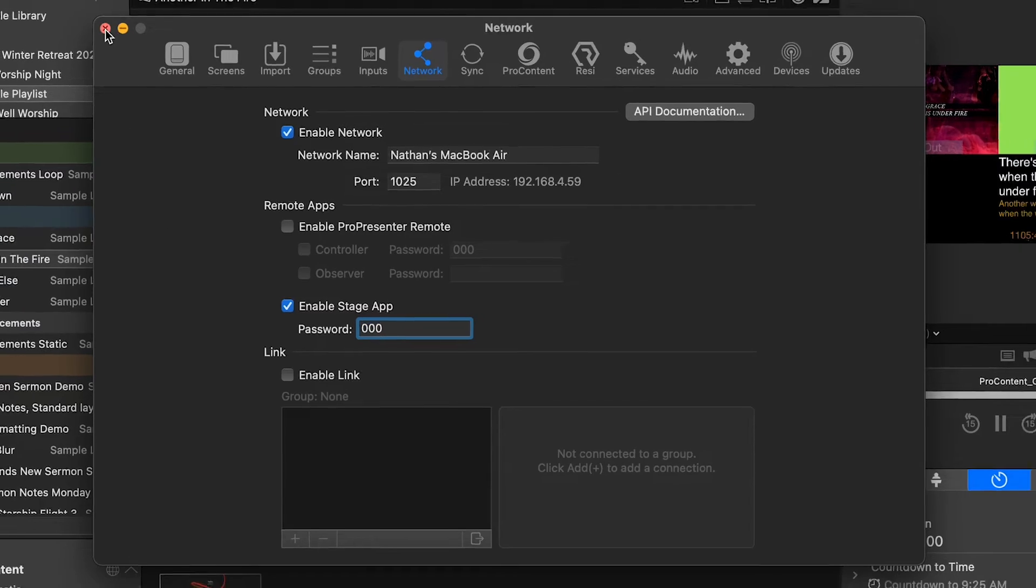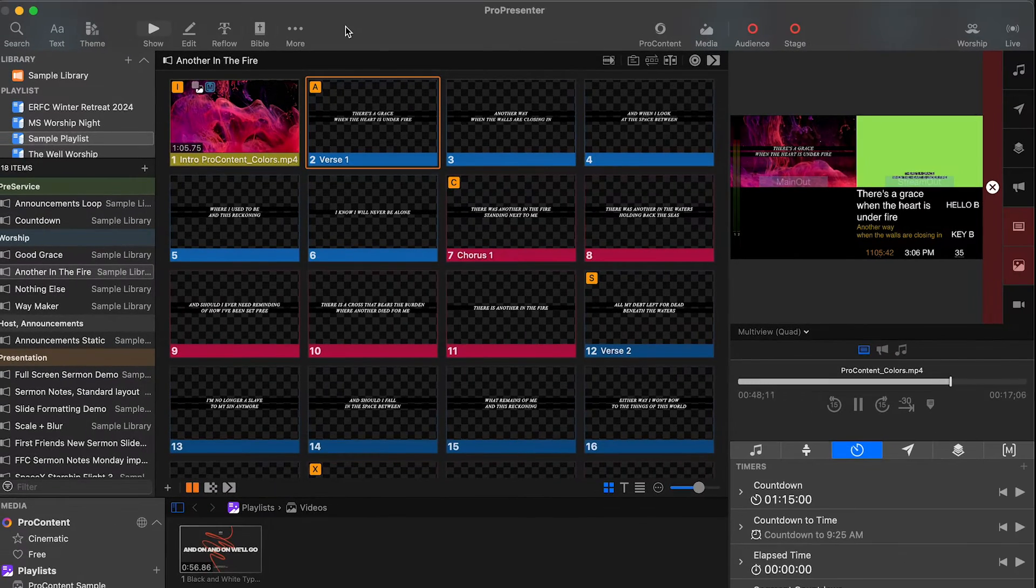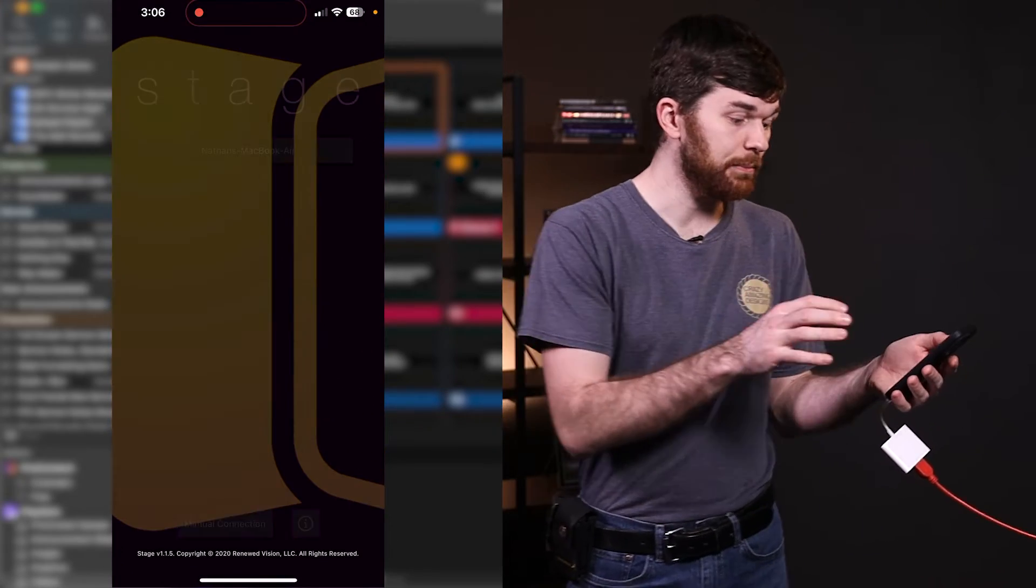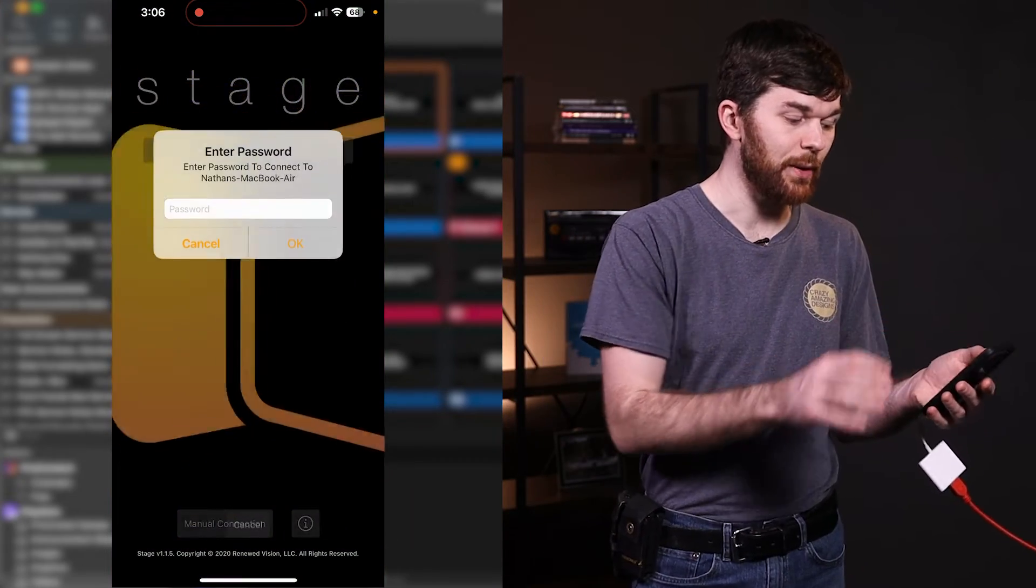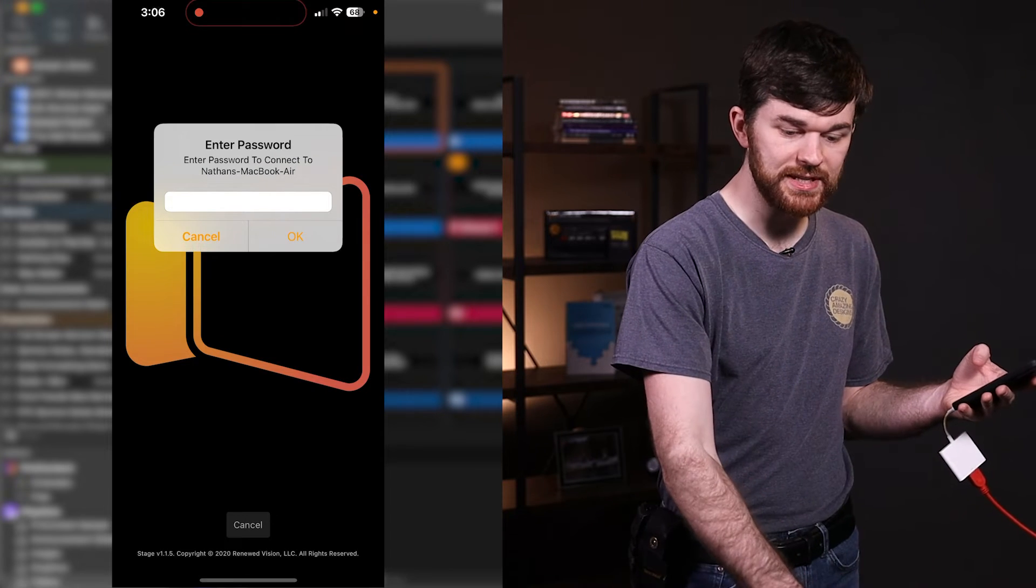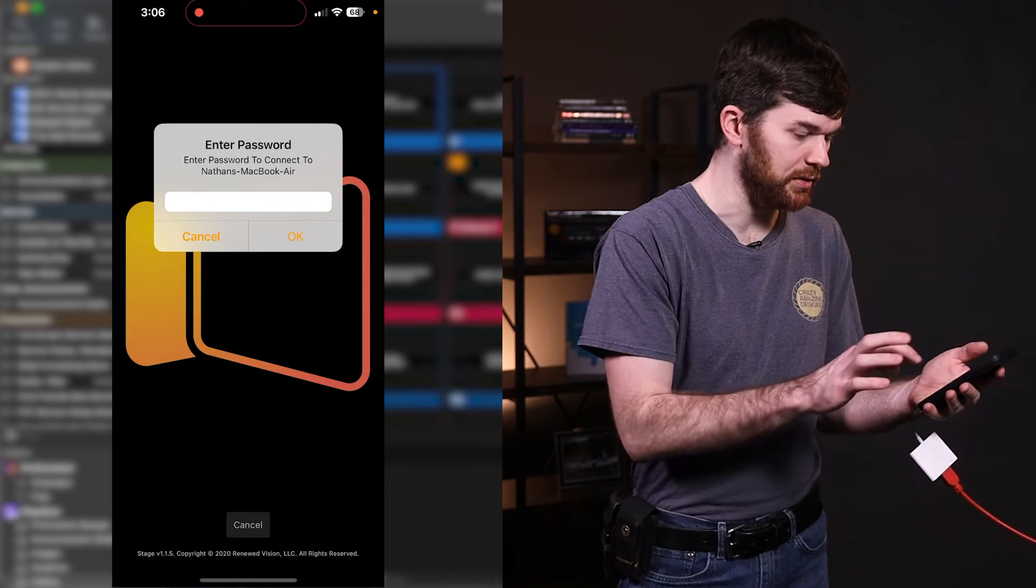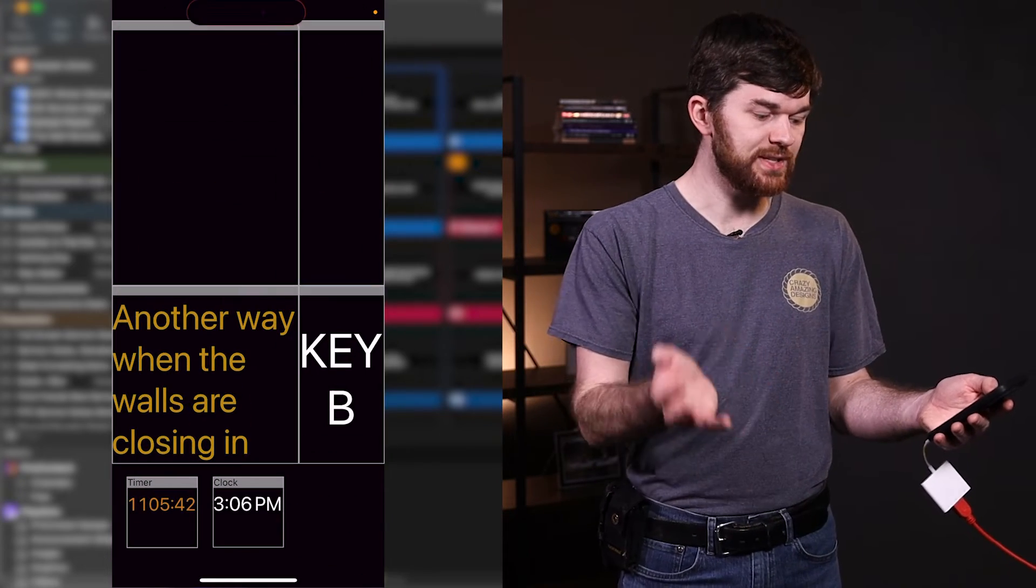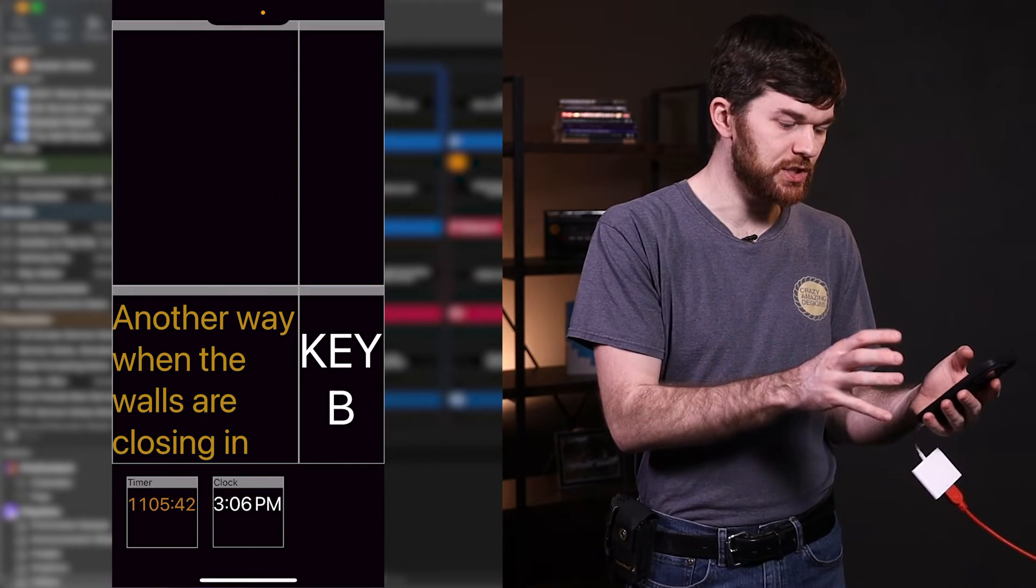Close out of this. And now when you reload the stage app, you should see the ProPresenter instance on your computer. So now when I click on it, I'll just type in the password three zeros. I'm going to go ahead and clear ProPresenter real quick. And I'm going to go ahead and hit OK. So now once it sees it and pulls it up, our stage display should come up.